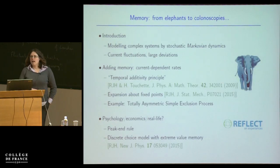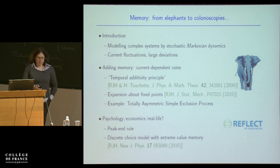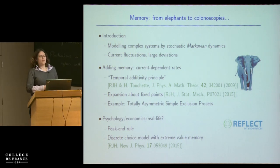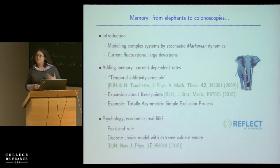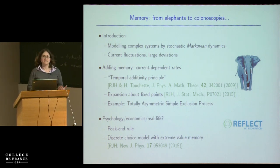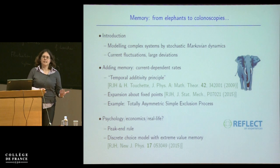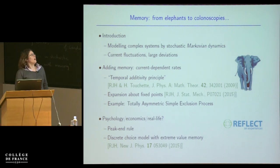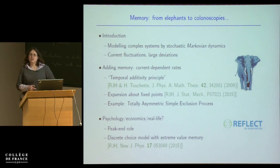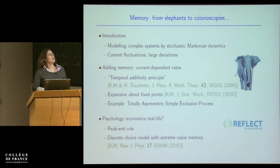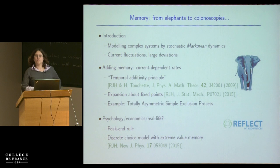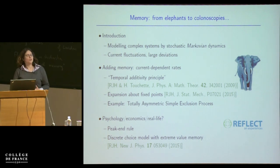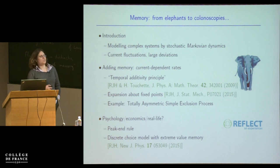Let me give you an outline of where we're going. I'll start with a fairly short introduction motivating the idea of modelling complex systems by stochastic Markovian dynamics — so without memory — and in particular I'll talk about things which are familiar to many of you: the ideas of current fluctuations and how we can describe them using the mathematics of large deviations.